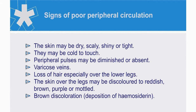The skin over the legs may be discolored to reddish, brown, purple, or even mottled. Brown discoloration may often develop from the deposition of hemosiderin in the tissues.